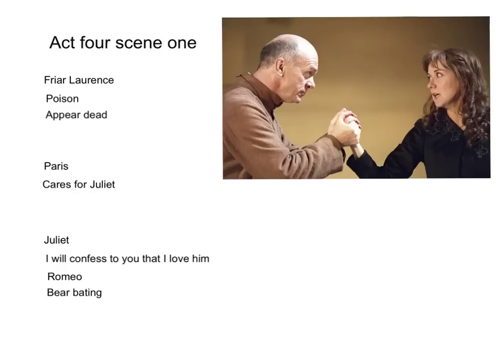Friar Lawrence says, 'Enough, get you gone. Be strong and prosperous in this resolve. I'll send a friar with speed to Mantua with my letters to thy lord.' So Friar Lawrence is going to send another friar, whose name is Friar John, to Mantua, where he will tell Romeo this plan of her appearing to be dead.